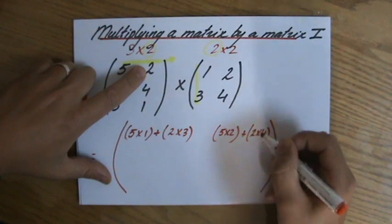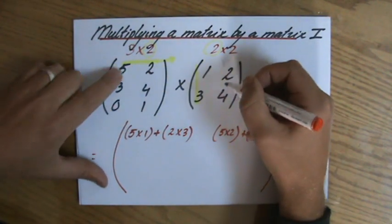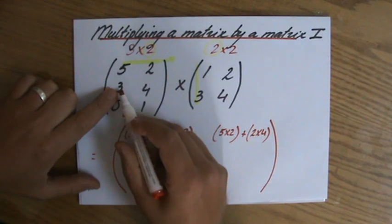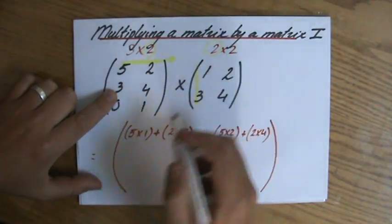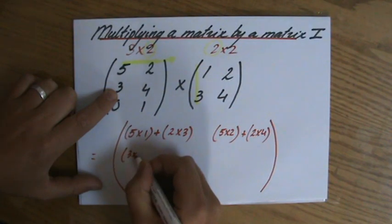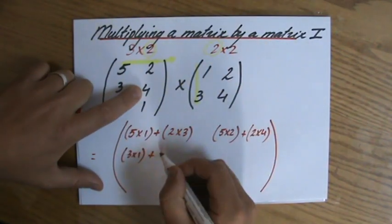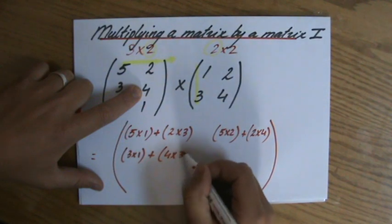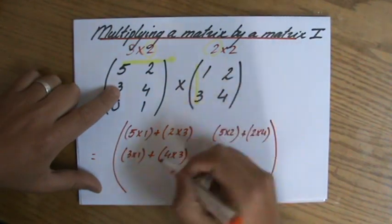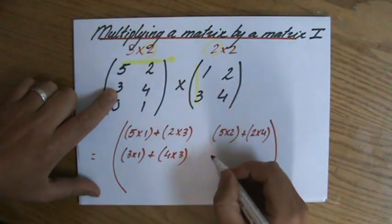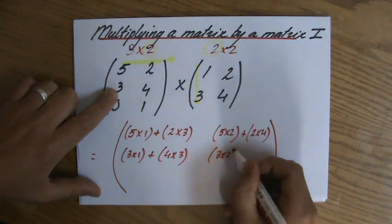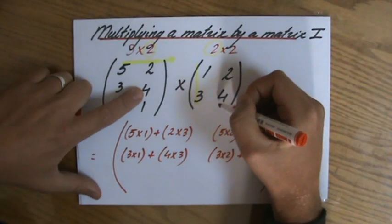Alright, finished. I drop now because I've done both of them. I do the same thing: horizontally here, vertically there - 3×1 + 4×3. And for my second piece of information on that particular row: 3×2 + 4×4.